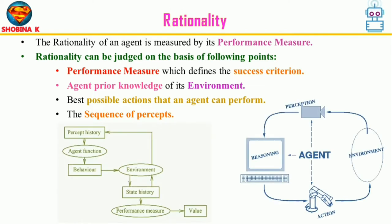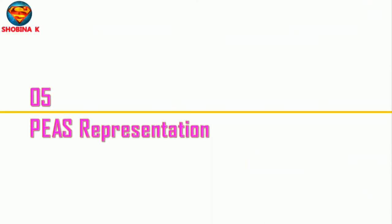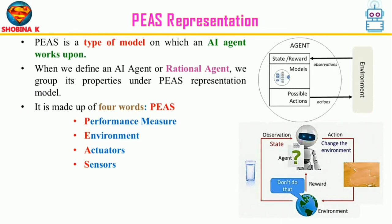A rational agent always performs the right action — the action that causes it to be most successful given its percept sequence. The problem an agent solves is characterized by performance measure, environment, actuators, and sensors — abbreviated as PEAS. The agent receives percepts from the environment and generates behavior which causes the environment to generate a state history. The performance measure evaluates this state history. Most high-performing agents are rational agents that consider all possibilities and choose the most efficient action, such as the shortest path with lowest cost.